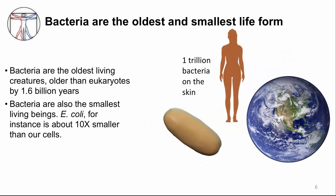Bacteria are also the smallest living forms — about ten times smaller than a single cell in our body. They colonize almost every available niche, from our skin to all of our internal mucosal surfaces. In some ways, we are walking planets, since about one trillion bacteria live on the surface of our skin alone.